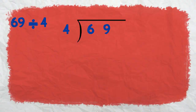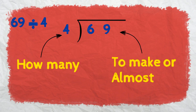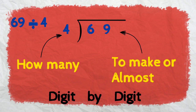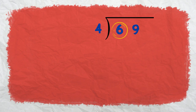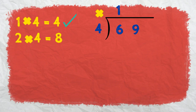Let's try one last problem: 69 divided by 4. We need to see how many 4s we need to make 69 or almost 69. As always, we start from the first digit on the left, digit by digit. Starting with number 6 — how many 4s do we need to make 6? From the 4s timetable: 1 times 4 equals 4, and 2 times 4 equals 8, which is too big. So 1 is the right answer, going on top. We multiply 1 by 4 to get 4, write it under 6, and subtract: 6 take away 4 equals 2, which is our remainder.